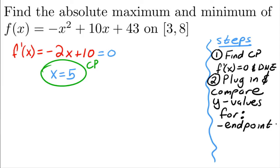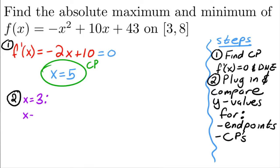We're going to compare the y-values for the endpoints and the critical points. In this case there's only one critical point, but if there were more we'd include all of them. Step two: grab the endpoints, which are 3 and 8, and the critical point 5, and plug each one into the function.